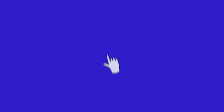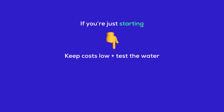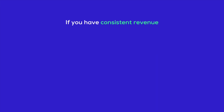Now that we've covered all the Shopify plans, you might be wondering which plan is right for you. Think of this as a quick decision tree to help you make the best choice. If you're just starting your online business and want to keep costs low while testing the waters, the Basic Plan is your best bet. At $39 per month, it gives you all the tools you need to get your first store up and running.